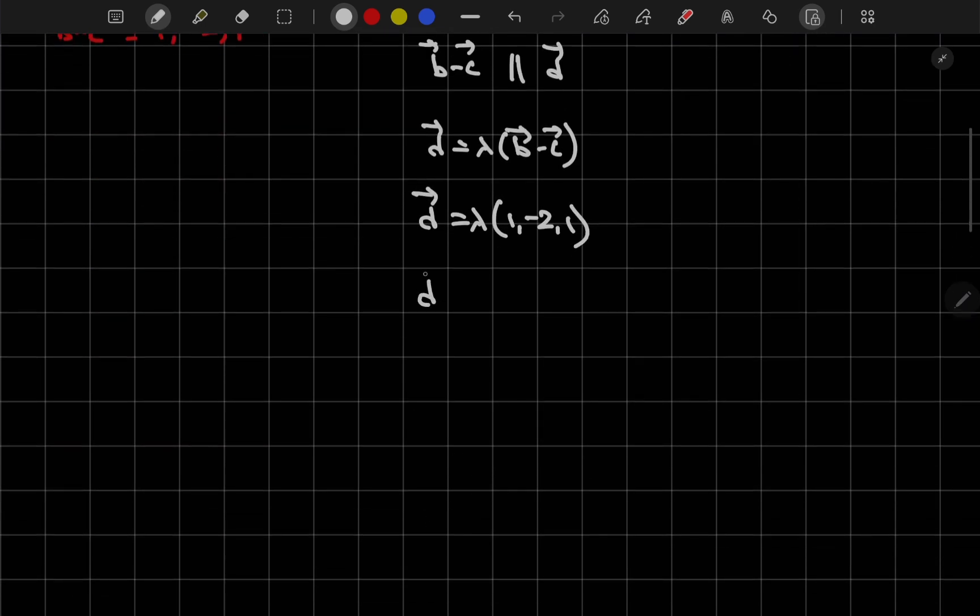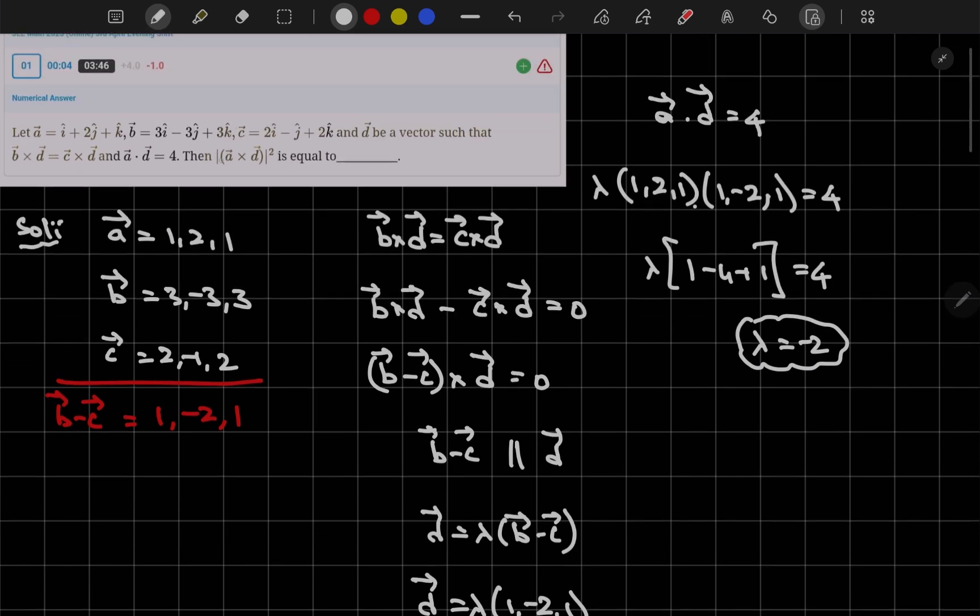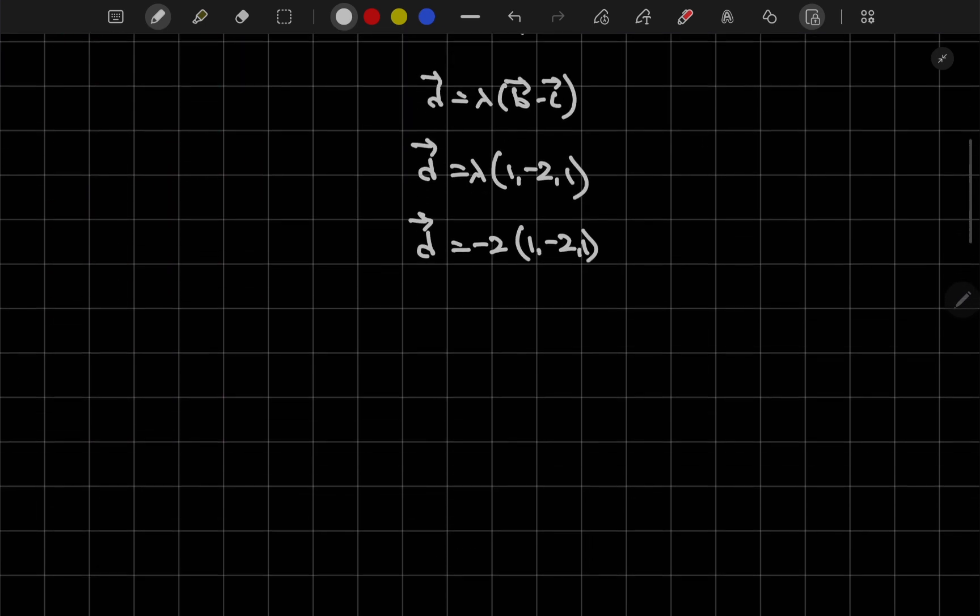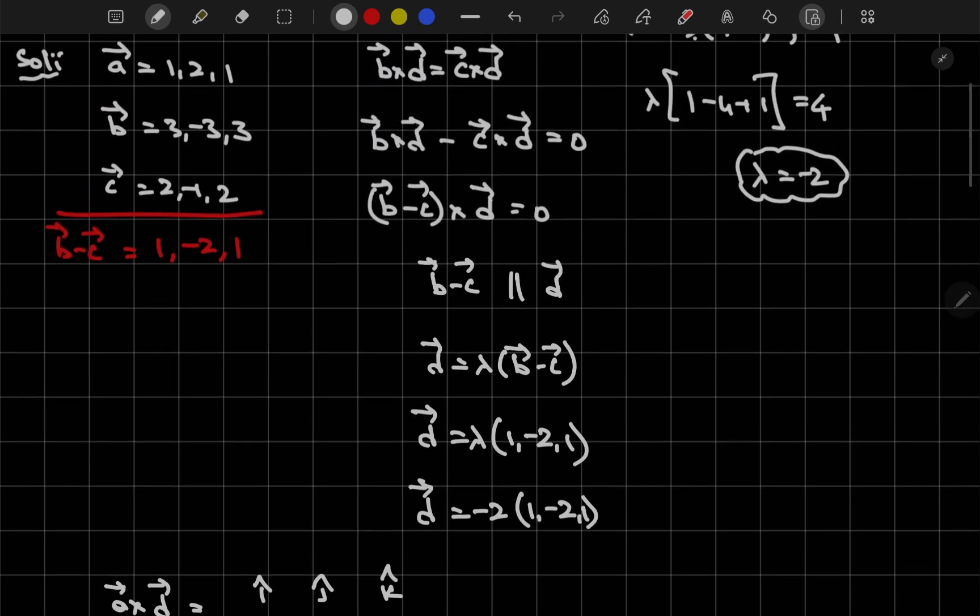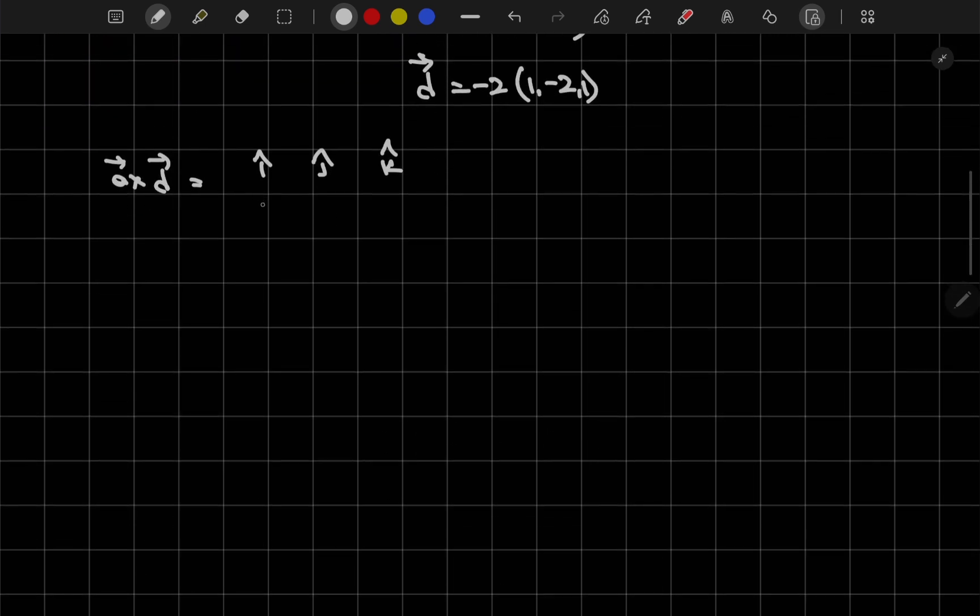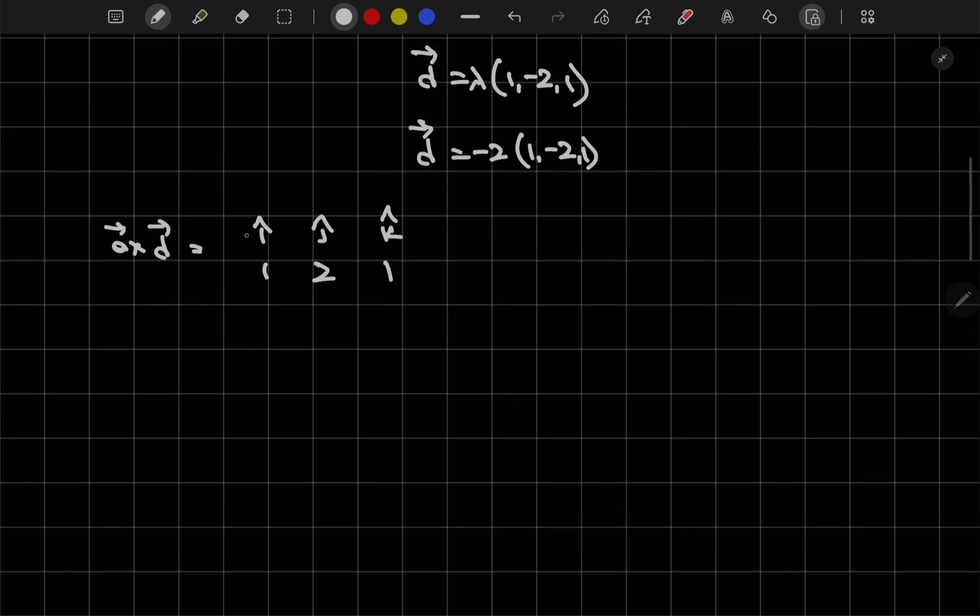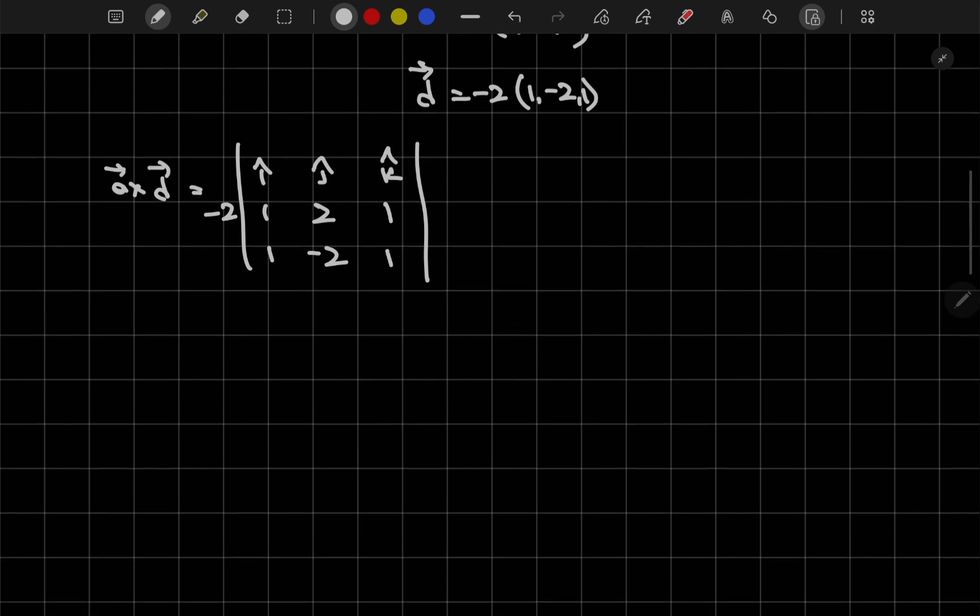So I got lambda value as minus 2. Therefore, D vector is minus 2 times of 1 comma minus 2 comma 1. This is my D vector. Now in the question he is asking find the magnitude of A cross D whole square. So first let me find A cross D. Which is nothing but I cap, J cap and K cap and A vector is 1 comma 2 comma 1 and D vector is minus 2 times of 1 comma minus 2 comma 1.